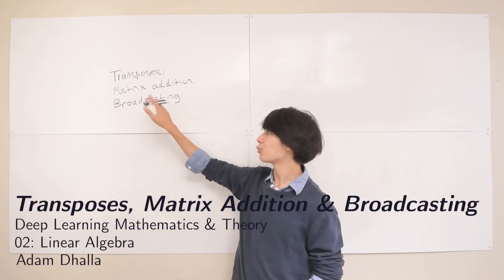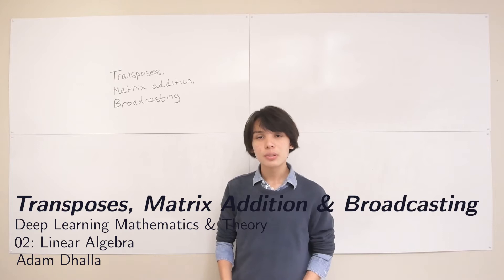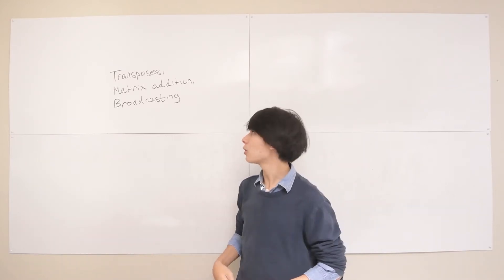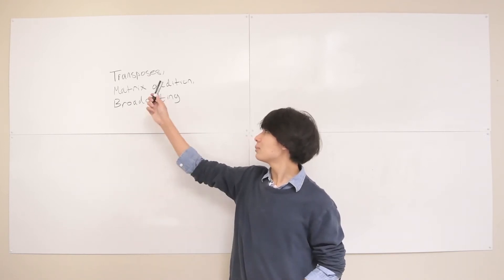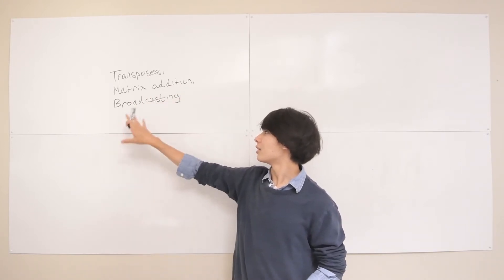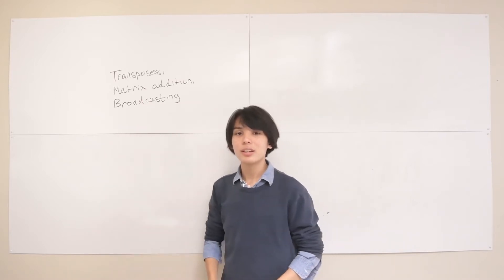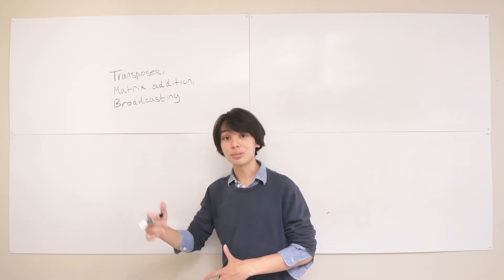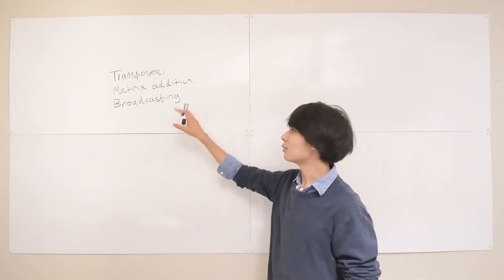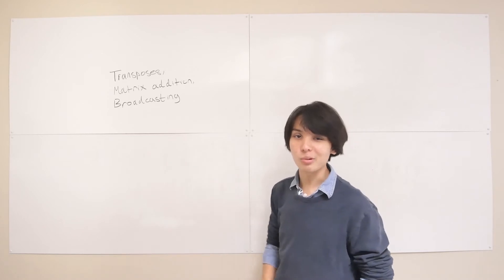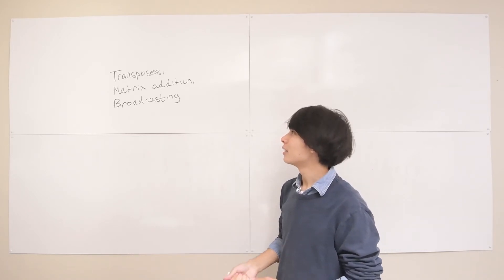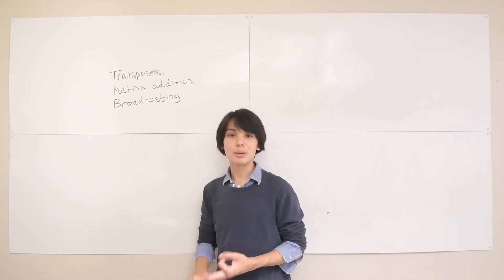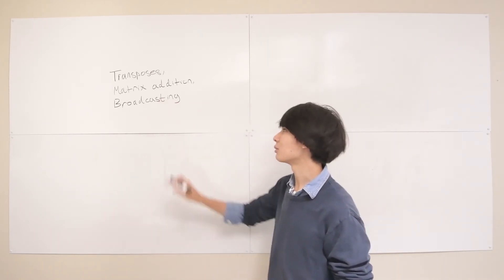In this lecture we'll be learning three elementary matrix and vector operations that are going to come up quite a lot throughout this course. Those are the transpose, matrix addition, and broadcasting. These are somewhat similar — the main thing they have in common is that you don't need to understand matrix multiplication, which is going to be the next lecture. Remember, last lecture we learned about vectors, scalars, and matrices and tensors, so these are just things we can do with those.